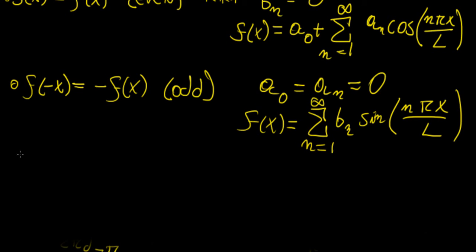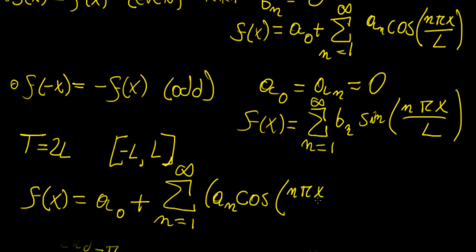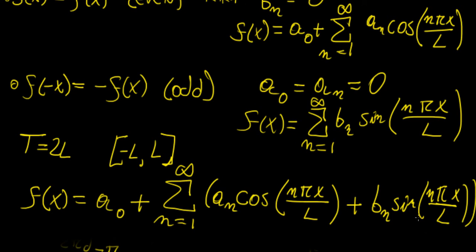In general, for a function of period 2L defined on the interval [-L, L], we have the Fourier series expansion: f(x) = a₀ + Σₙ₌₁^∞ aₙ cos(nπx/L) + bₙ sin(nπx/L). If we substitute L = π, this reduces to the original cosine(nx) and sine(nx) form, so this is indeed the more general case. In the next video, we will solve a few examples on Fourier series to illustrate how this works.